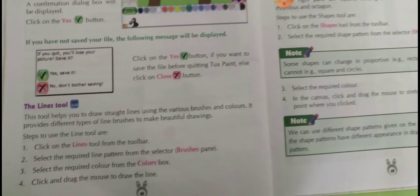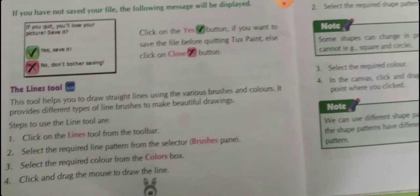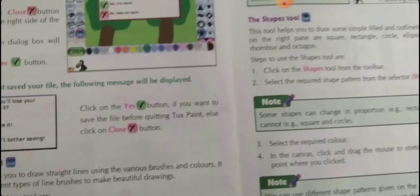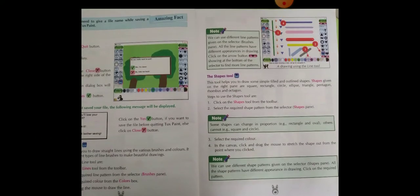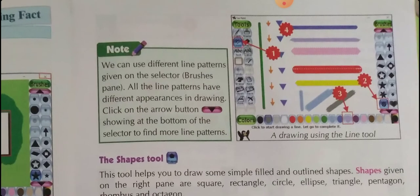Next tool is the Lines Tool. By using the lines tool you can draw a line — it helps you draw a straight line using various brushes and colors. It provides different types of line brushes to make beautiful drawings. Step 1: click on Line Tool. Step 2: select any brush from the selector. Step 3: click on any color you want to draw with. Step 4: click on the drawing area and drag your mouse — in whichever pattern you drag, that line will appear in the drawing area.